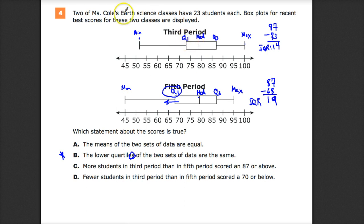Now, with third period, here's 70. Not even the entirety of Q1 is inside 70. So I can say with confidence that fewer students in third period than in fifth period scored a 70 or below. So that's the shift that you need to make.